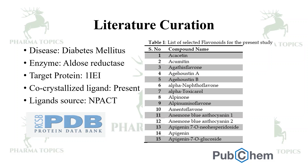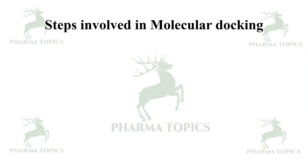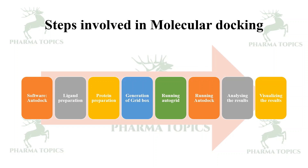The ligands are taken from the PubChem or NPACT site. The steps in molecular docking are as follows: the software to be used is AutoDock, Pyrex, EasyDock Vina, or any online tool. You have to prepare the ligand, prepare the protein, generate the grid box, then run AutoGrid, then AutoDock, and finally analyze and visualize the results. These are the basic steps involved in molecular docking.